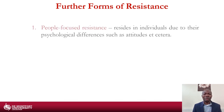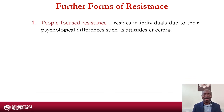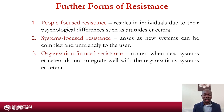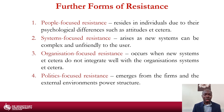There are four forms of resistance. First, people-focused resistance — residing in individuals due to their psychological differences such as attitude and cultural issues, which can have major impacts in terms of how people accept the need for change. Second, system-focused resistance — where new systems can be complex and unfriendly to users. Third, organisation-focused resistance — where new systems do not integrate well within the existing organisation system. Fourth, politics-focused resistance — all of which have been captured in the literature.